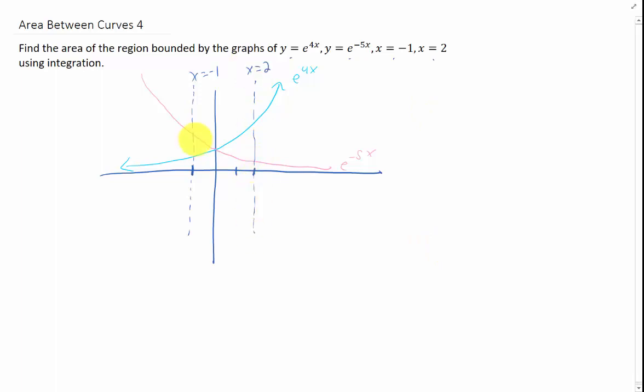So the region bounded by these graphs is again split up into two pieces. You have one piece here and one piece on the other side of the y-axis. Since these functions cross within the interval that we're interested in, we need to split this integral up into two pieces to find the area.